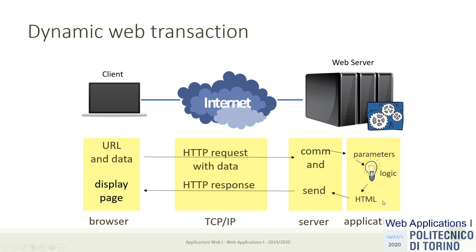The only thing the web server can do is delegate the creation of the resource to a software component — to a real web application. That's why I put some gears here in the web server: it's not just a server but contains algorithms that actually generate the content. The web server says it cannot deliver this file because it doesn't exist, so it delegates to a program the generation of the HTML file. This HTML file is then returned to the web server, which completes the request and returns it to the client.